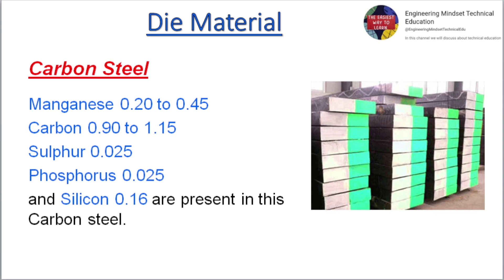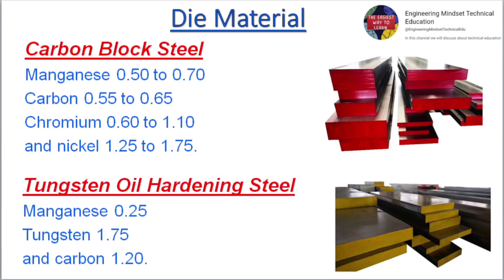Carbon steel. Manganese 0.50 to 0.70, carbon 0.55 to 0.65, chromium 0.60 to 1.10, and nickel 1.25 to 1.75.